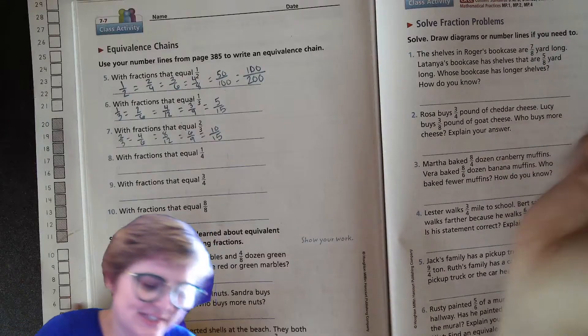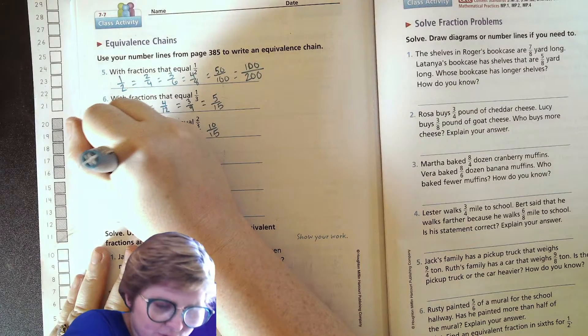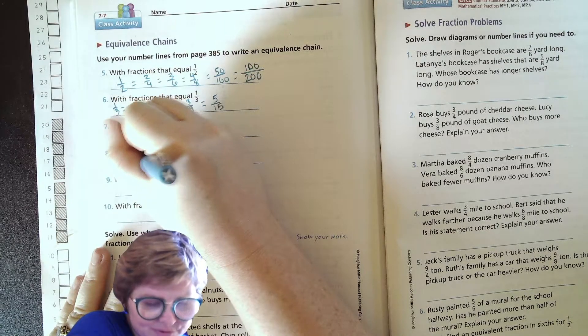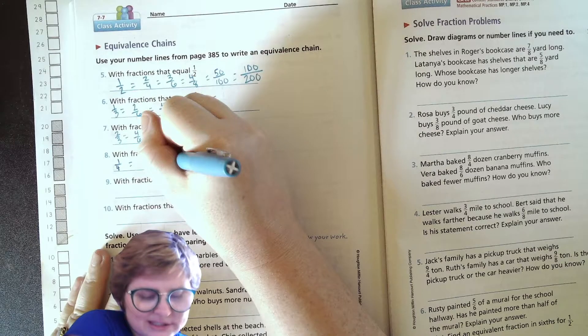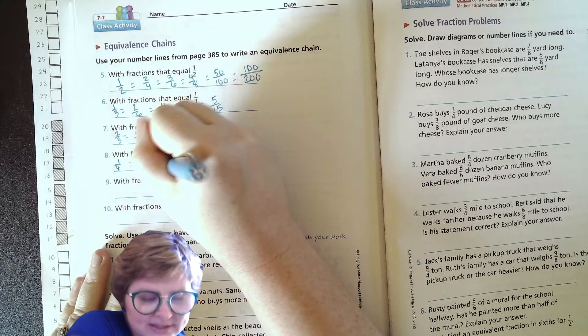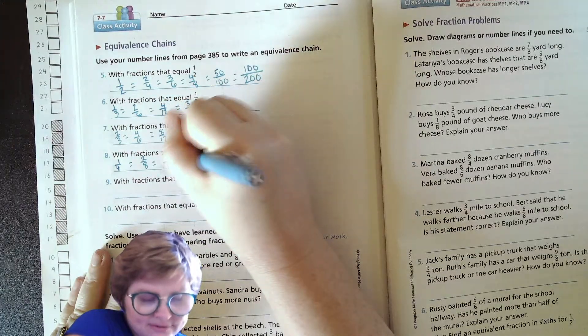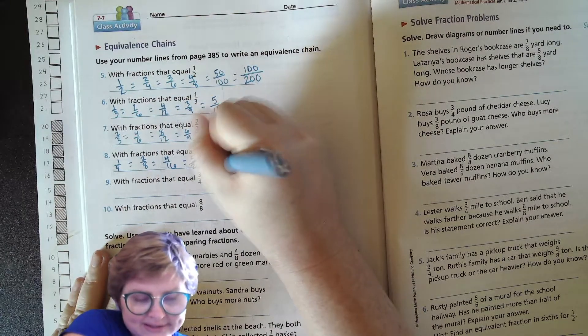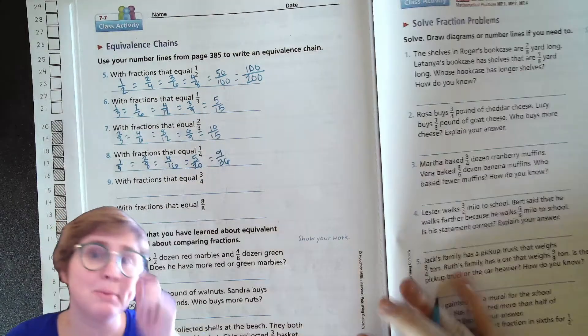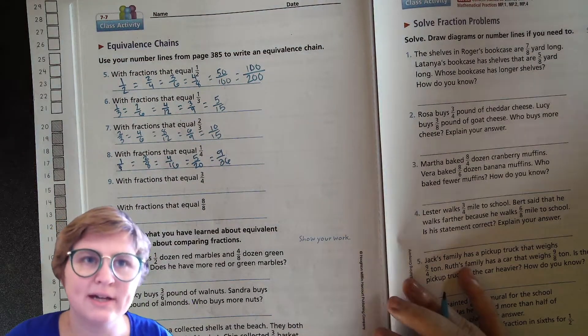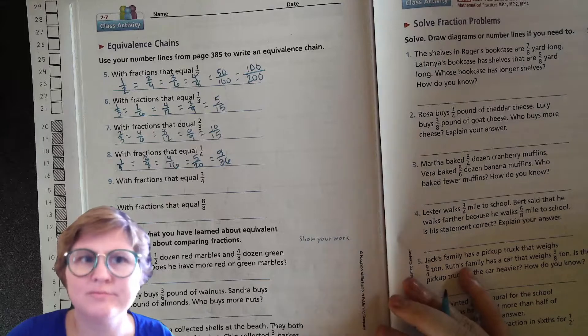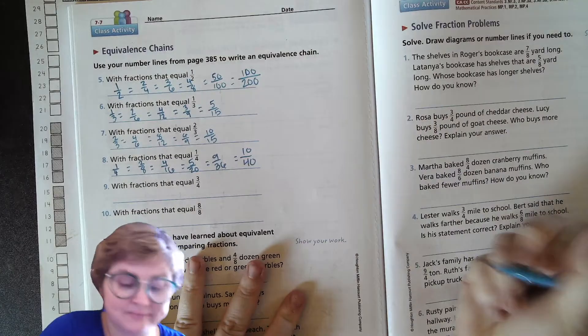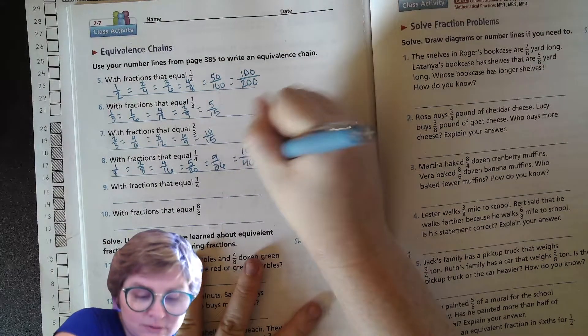With fractions equal to one-fourth, let's do one-fourth equals how many eighths? Two-eighths. Equals, let's see, four-sixteenths, five-twentieths, nine thirty-sixths. You'll notice I'm just using some of my math facts to think, hmm, what times four equals what? You can use any of them. Ten-fortieths, eleven forty-fourths.